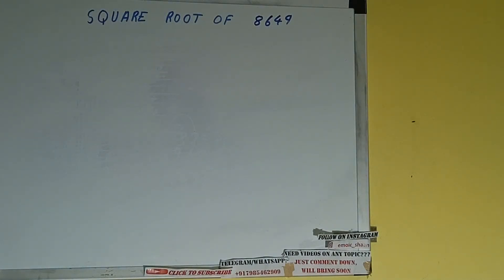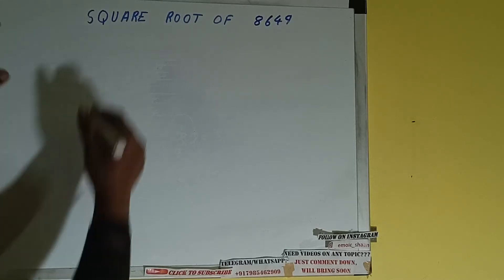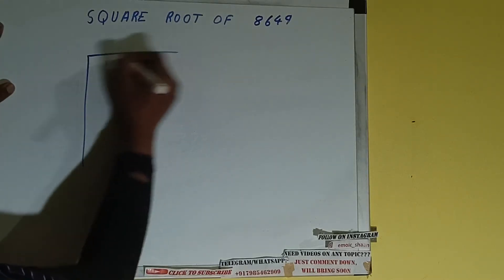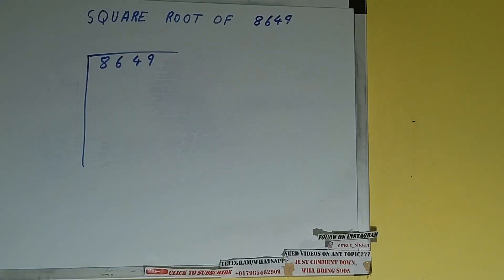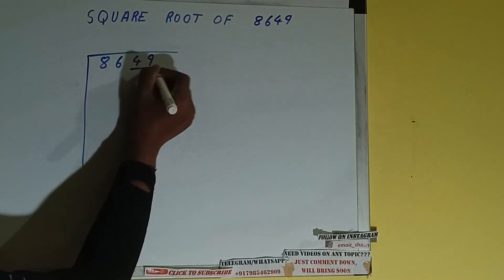Hello friends, and in this video I'll be helping you with the square root of the number 8649. So let's start. First of all, we need to write the number like this: 8649. Next thing we need to do is we need to form pairs from the right-hand side. So one pair will be 49 and one pair will be 86.